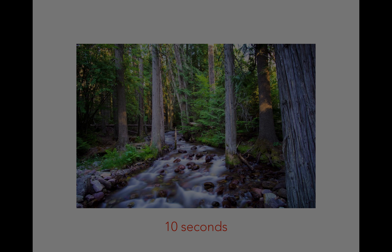Here's a shot I took of a creek at Glacier National Park. The water is the movement in this shot, and I wanted that milky, smooth feel. It would look way different with a phone or a very short shutter speed. I had the shutter open for 10 seconds — I tried 8, 13, and 15 seconds, but 10 turned out to be the best. Even though the shutter was open that long, nothing else in the scene is moving, which is why everything else is crystal clear. The trees and rocks aren't moving — it's just the water.